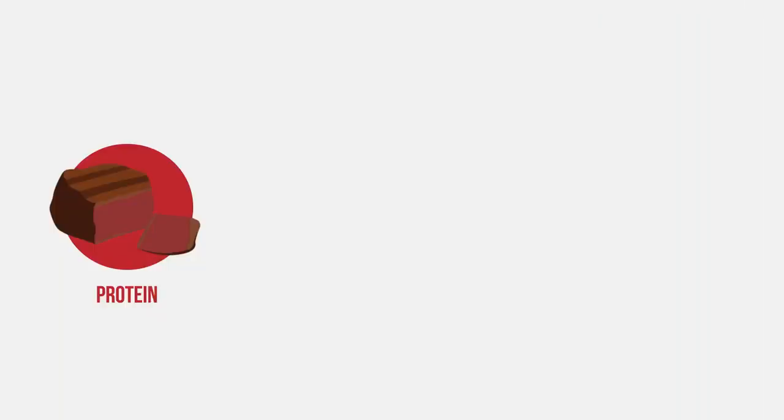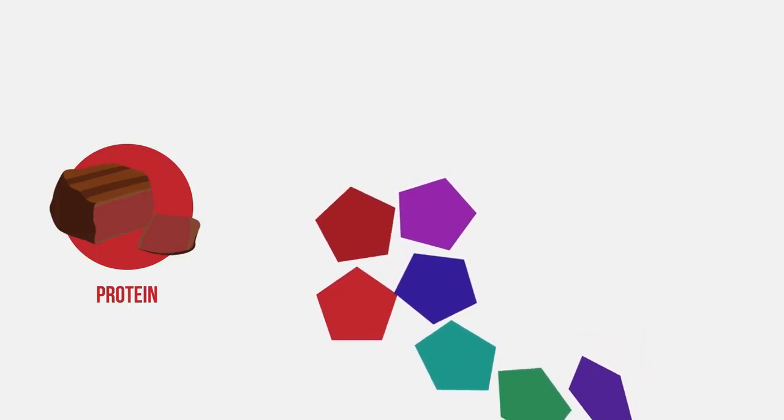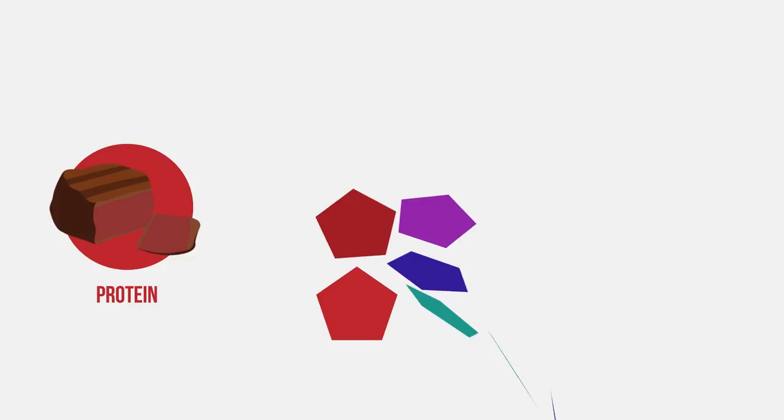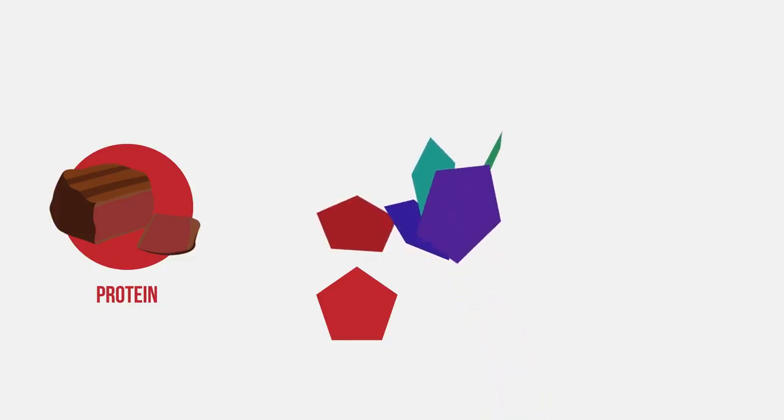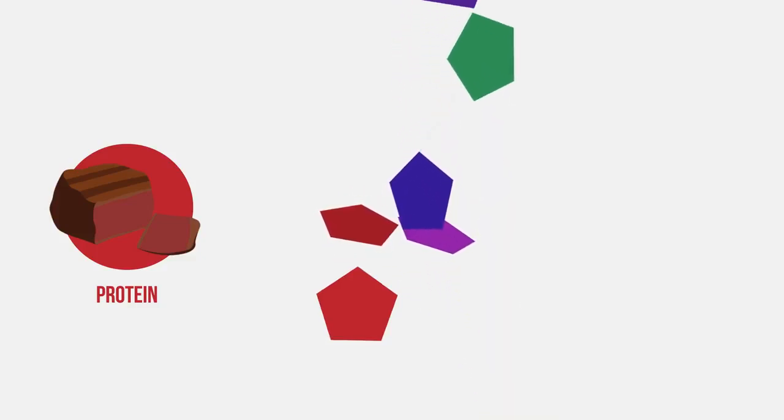Now onto proteins. Proteins are also polymers. But whereas in carbohydrates the monomer or repeating unit was glucose, for proteins it's amino acids. The protein then folds up into a complex 3D shape, which is held together by weak bonds. The function of each protein depends on its shape.